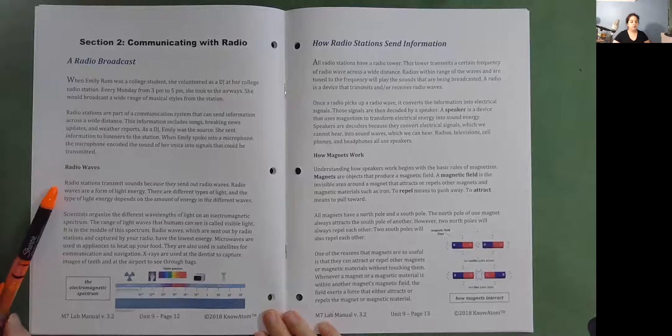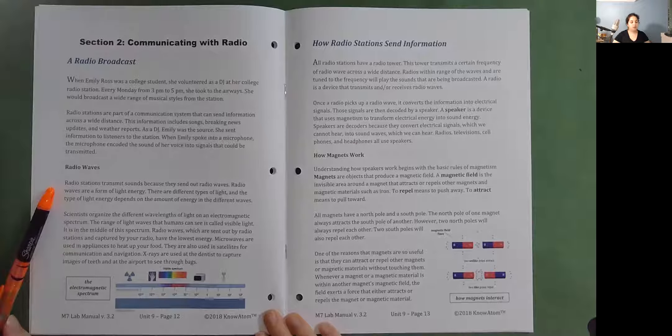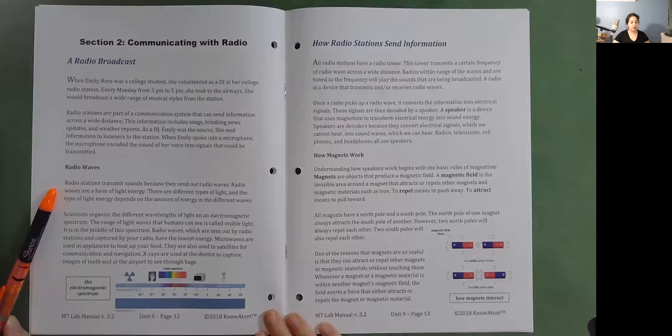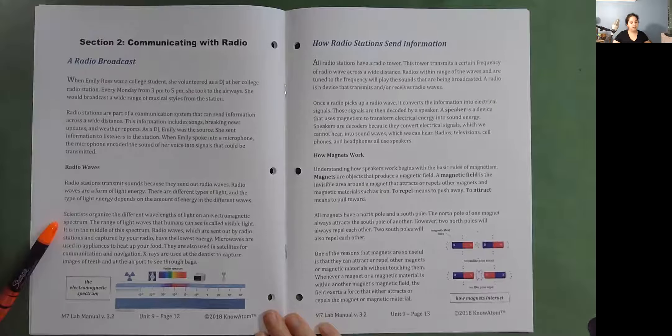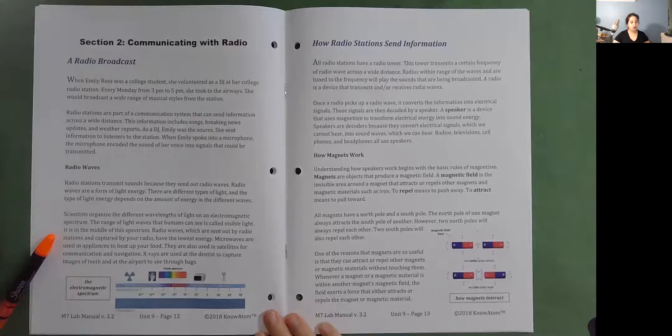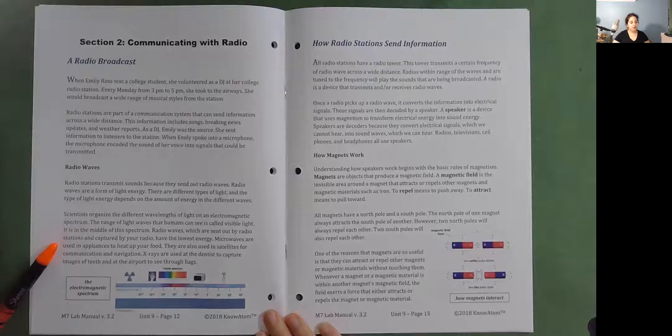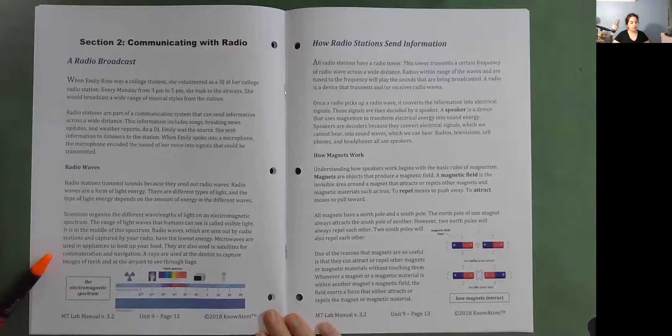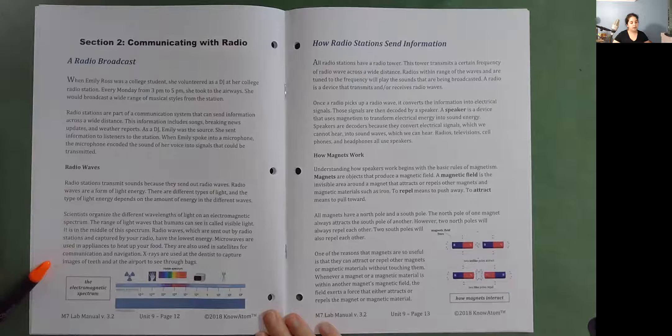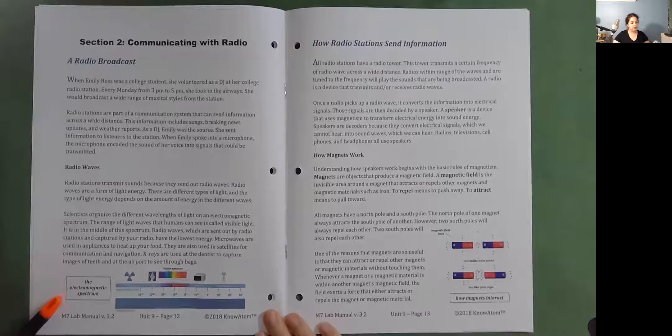Radio waves. Radio stations transmit sound because they send out radio waves. Radio waves are a form of light energy. There are different types of light, and the type of light energy depends on the amount of energy in the different waves. Scientists organize the different wavelengths of light on an electromagnetic spectrum. The range of light waves that humans can see is called visible light. It is in the middle of the spectrum. Radio waves, which are sent out by radio stations and captured by your radio, have the lowest energy. Microwaves are used in appliances to heat up your food. They are also used in satellites for communication and navigation. X-rays are used at the dentist to capture images of teeth and at the airport to see through bags. The electromagnetic spectrum.